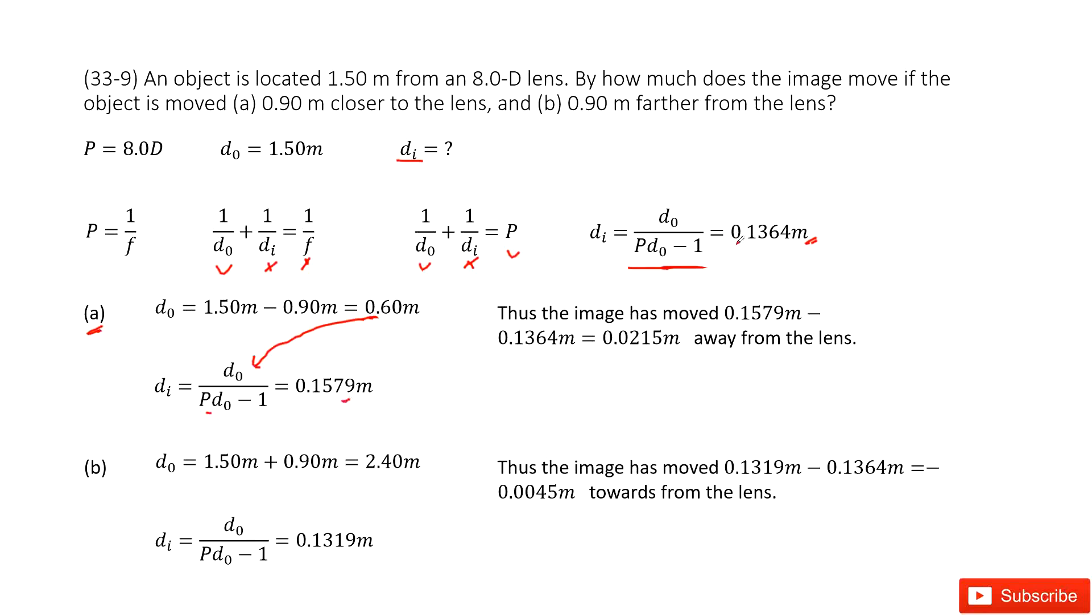See, originally the image distance is 0.1364. Now it becomes 0.1579. So now the image has moved. Just find the gap between these two: 0.0215 away from the lens.